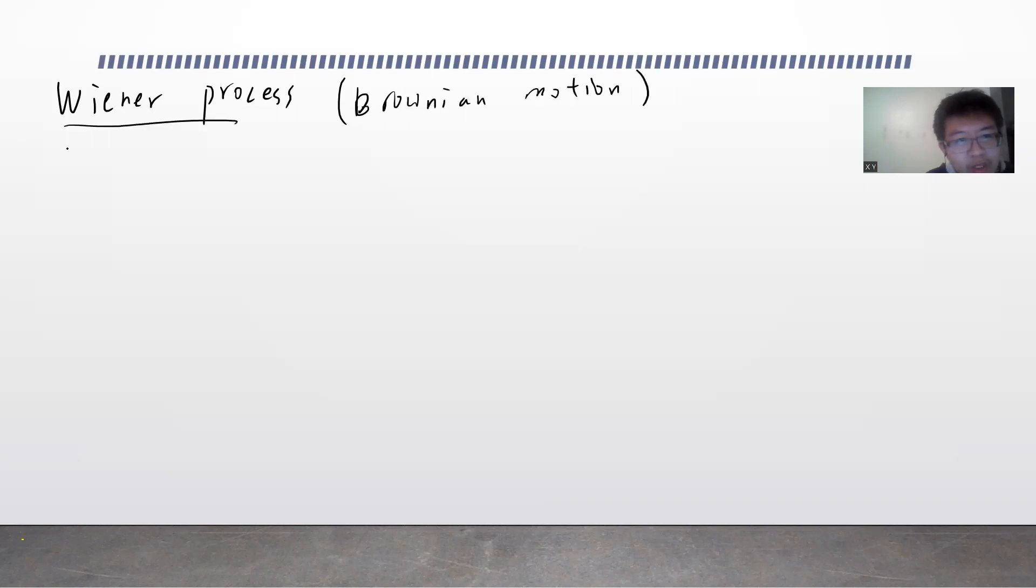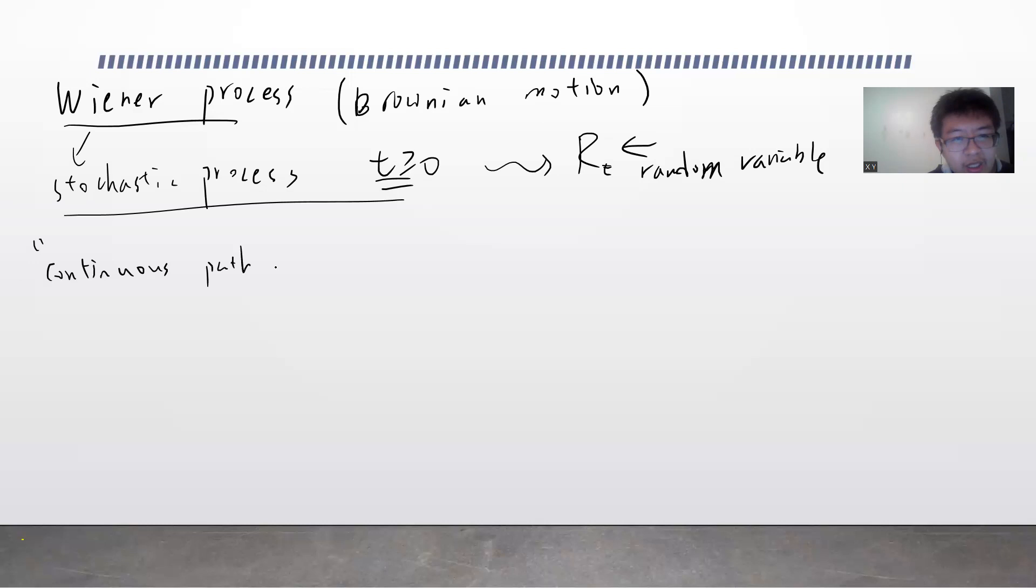So one idea is that when I say process, basically the idea is people also call stochastic process. So stochastic process basically means that for each t greater or equal to zero, you have a random variable, maybe call r of t. So basically given any t greater or equal to zero, you associate each t with the random variable. You can view the stochastic process as continuous path of random variables.